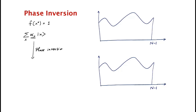What does this phase inversion step do? It changes the superposition like this: if x is not the special element, then it just leaves it alone. But if x is the special element, then it inverts the phase — it replaces it by minus alpha_{x*} |x*⟩.